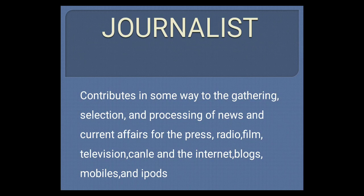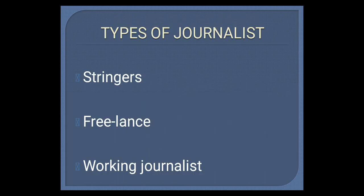Who is a journalist? A journalist is a person who contributes to a newspaper about the news they have gathered. The types of journalists are stringers, freelancers, and working journalists. Stringers are also called freelancers — they do not work in the newspaper organization but provide news to it. Working journalists are those who work as journalists within a newspaper organization.